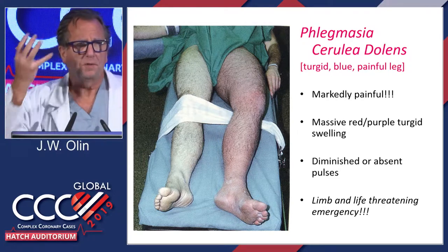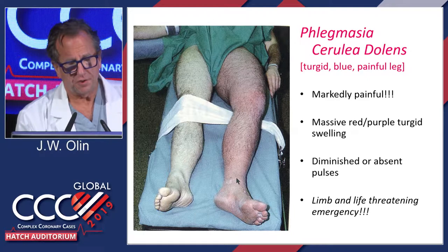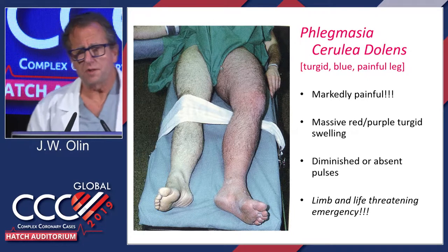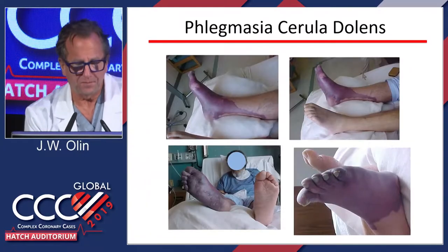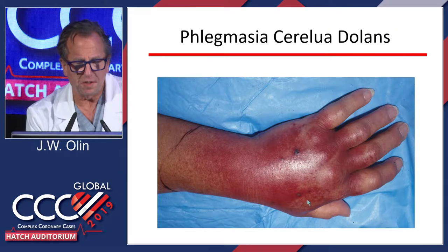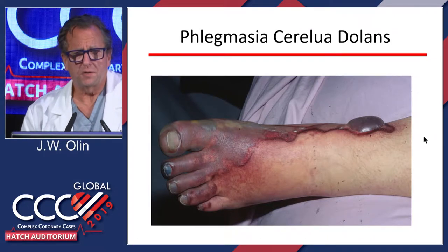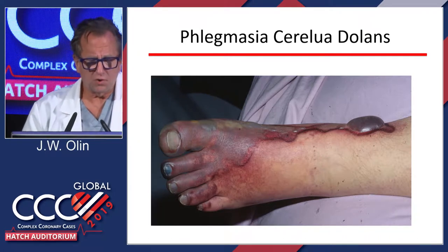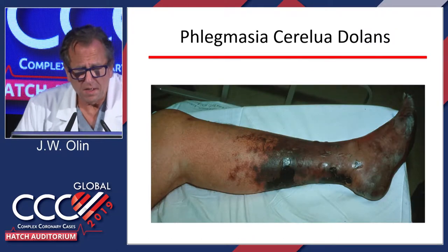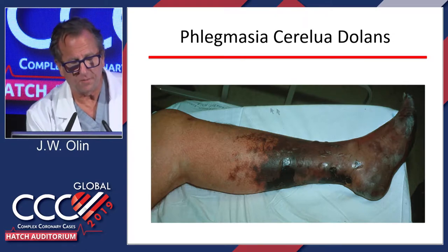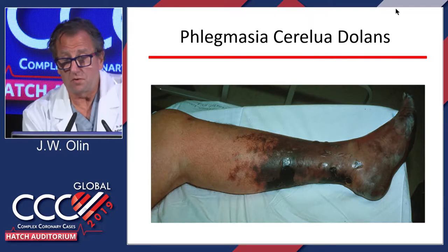You get blood into the leg but can't get blood out. All the collaterals are thrombosed, and eventually the venous pressure and tissue interstitial pressure overcomes arterial pressure. If you did an arteriogram, you'd see blood coming down and then it would just end at a point. This is one of the forms of venous gangrene. About 50% of these people have an underlying malignancy, and about 20% have heparin-induced thrombocytopenia. If not recognized, it ends up with a below-knee amputation on one leg and a transmetatarsal amputation on the other.